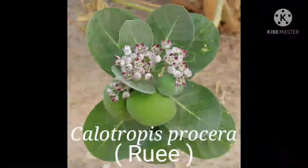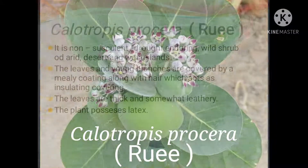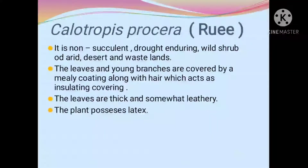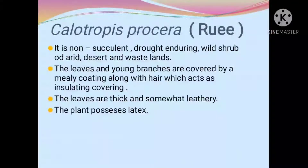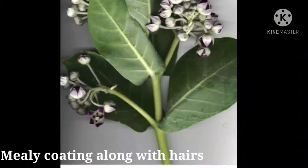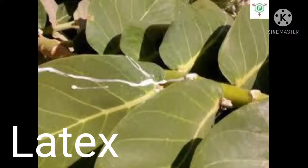Let's see about Calotropis prosera. The common name of Calotropis prosera is known as the rui. The adaptations of this plant: it is a non-succulent, broad-enduring wild shrub of arid desert and wasteland — present in regions where water is available in less amount. The leaves and young branches are covered by a milky coating along with hairs which act as an insulating covering. The leaves are thick and somewhat leathery. The plant possesses latex — that white fluid-like structure coming out from the leaf, as shown in the diagram.